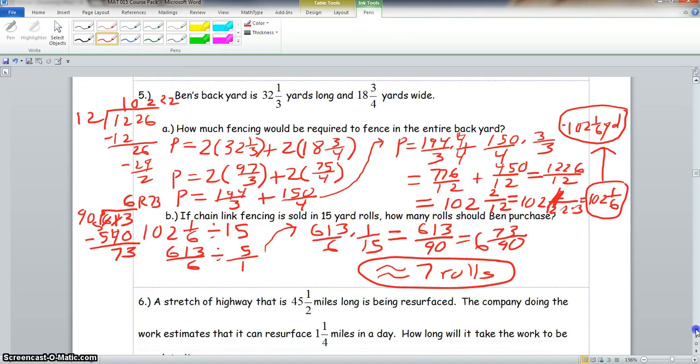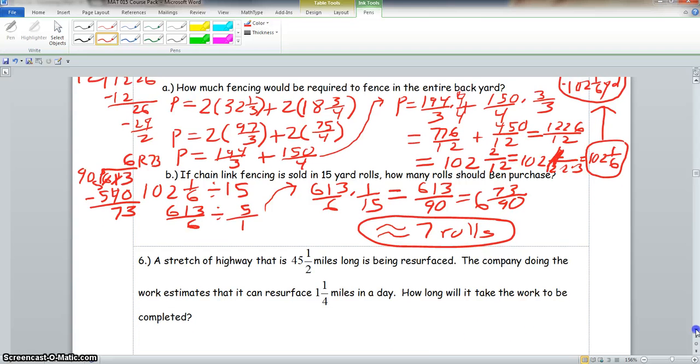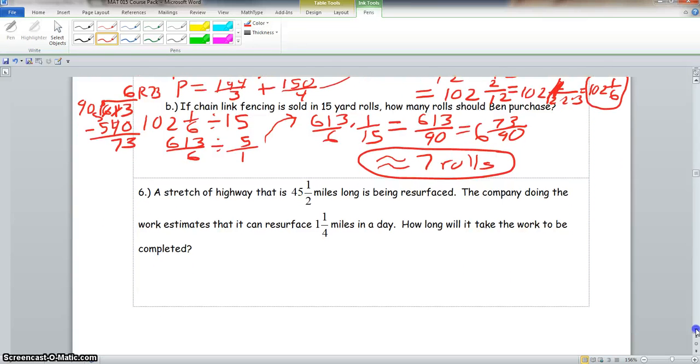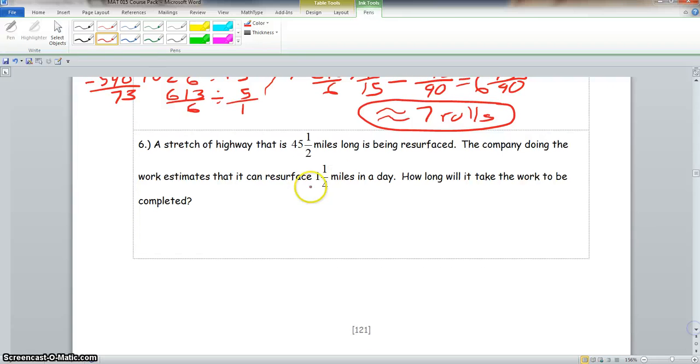Now we scroll down here to number 6. It says a stretch of highway that is 45 and 1 half miles long is being resurfaced. The company doing the work estimates that it can resurface 1 and 1 fourth miles in a day. How long will it take the work to be completed? So we have 45 and 1 half miles divided by 1 and 1 fourth miles.